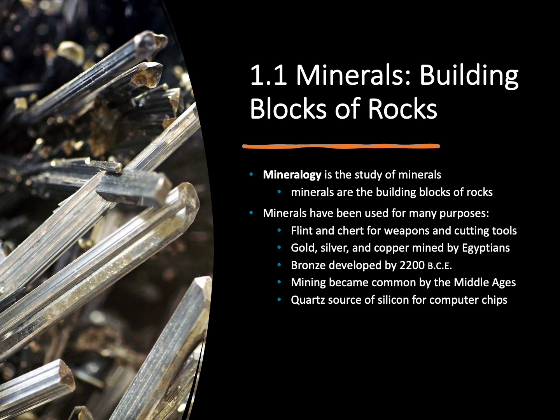Even since early humans, when we were hunting and gathering, we were actually using things like flint and chert for our weapons and tools. We started using metals like gold, silver, and copper just a couple thousand years ago. And even today, our life is ruled by minerals because we're all using electronics — quartz is a major component of the silicon in our computer chips.